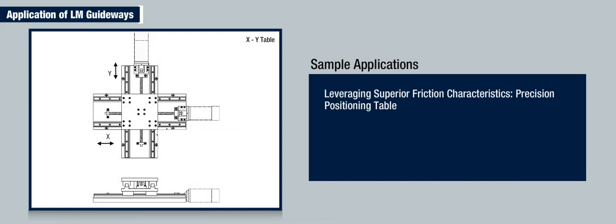Here is an example of a precision position table that takes advantage of the superior friction characteristics of LM guideways. The linear guides are used to move a machine table in the direction of its X or Y axis accurately.